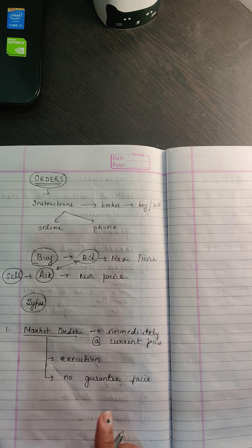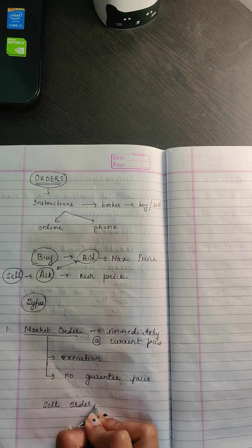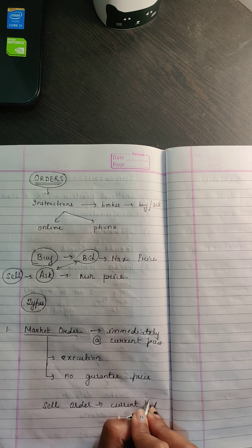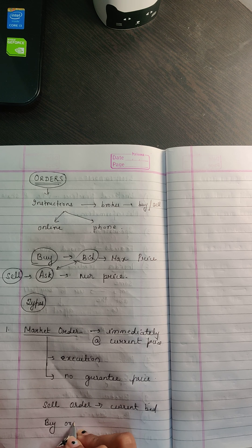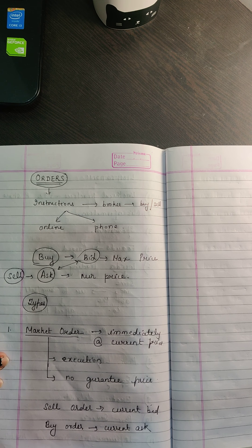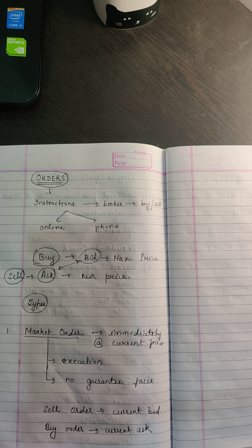If you are going for a sell order, the security will be sold at whatever is the current bid price. If you are going for a buy order, you will buy at whatever is the current ask price. In this type of order the investor is not worried about the price — he just wants to move in or out of the security immediately. The investor has to remember that the last traded price may not be available; in a market order it can be any price currently prevailing.